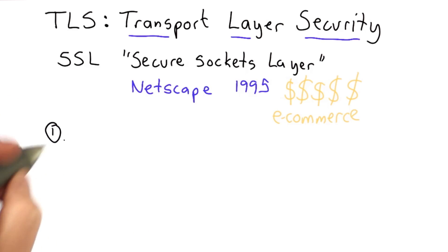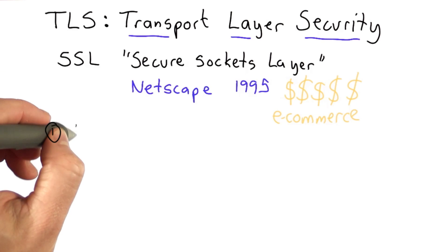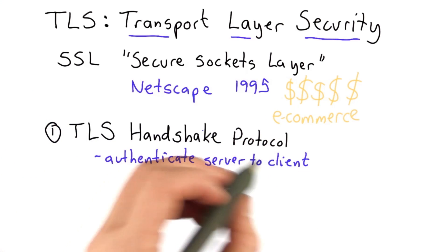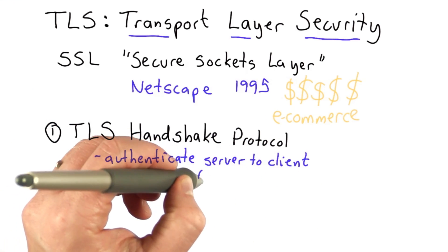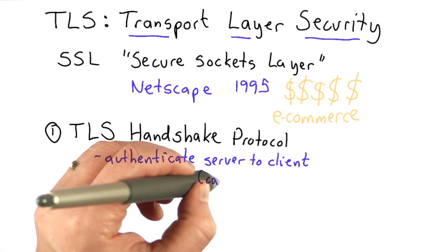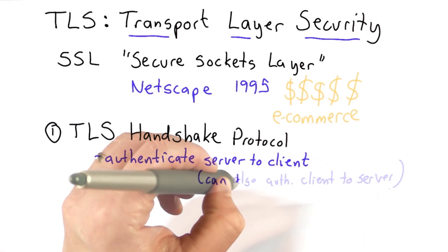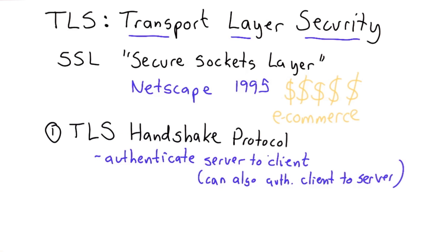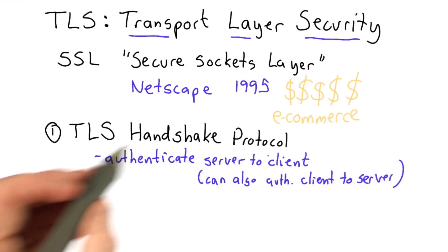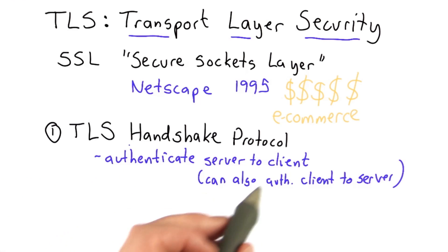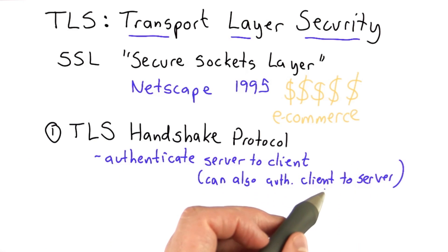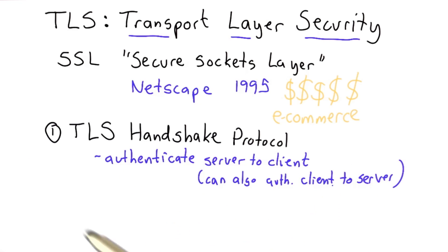TLS consists of two main parts. The first is the Handshake Protocol, which is used to authenticate a server to a client. It can work in both directions — it can also be used to authenticate clients to servers. However, the way it's used on the web, this rarely happens, as it would require clients to have public keys known to the servers.